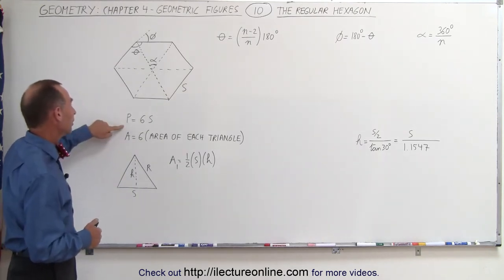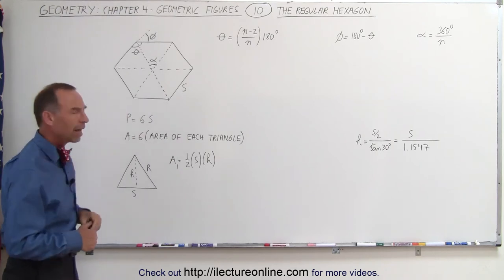Therefore, to find the perimeter, it's simply six times the side. But how to find the area?